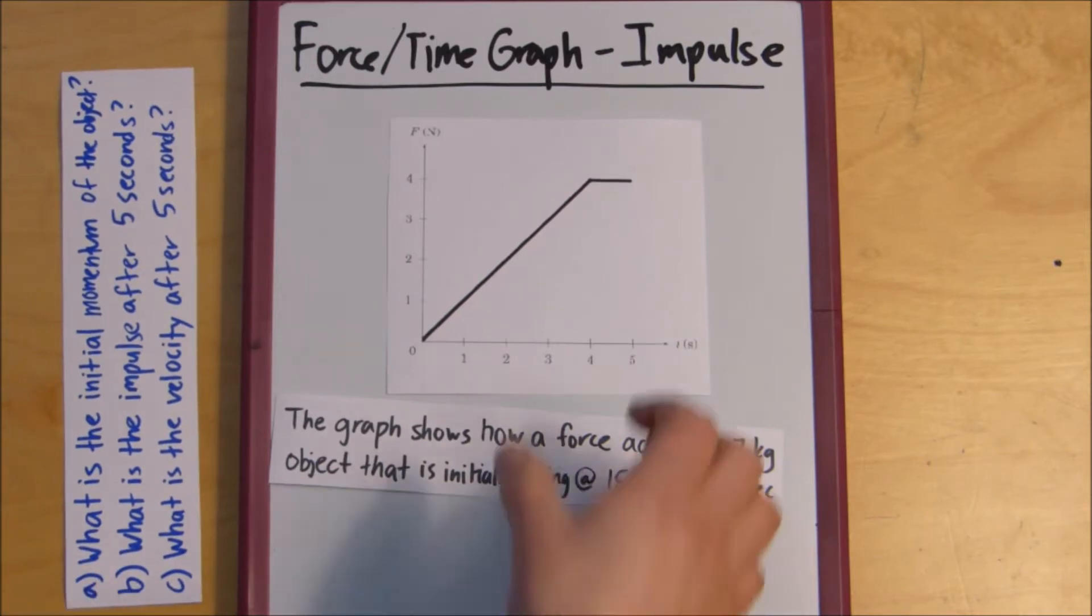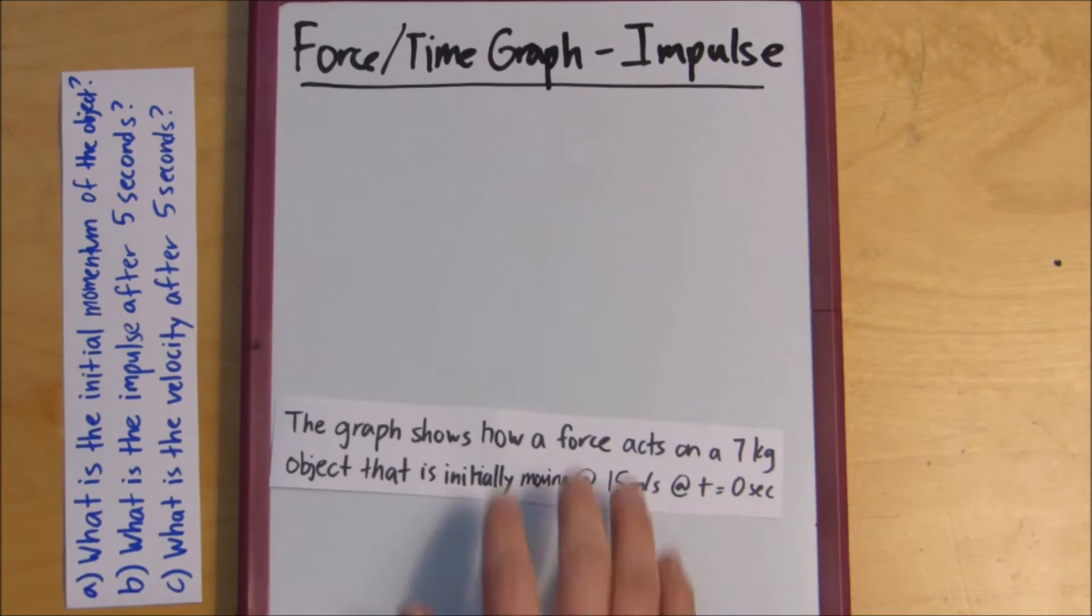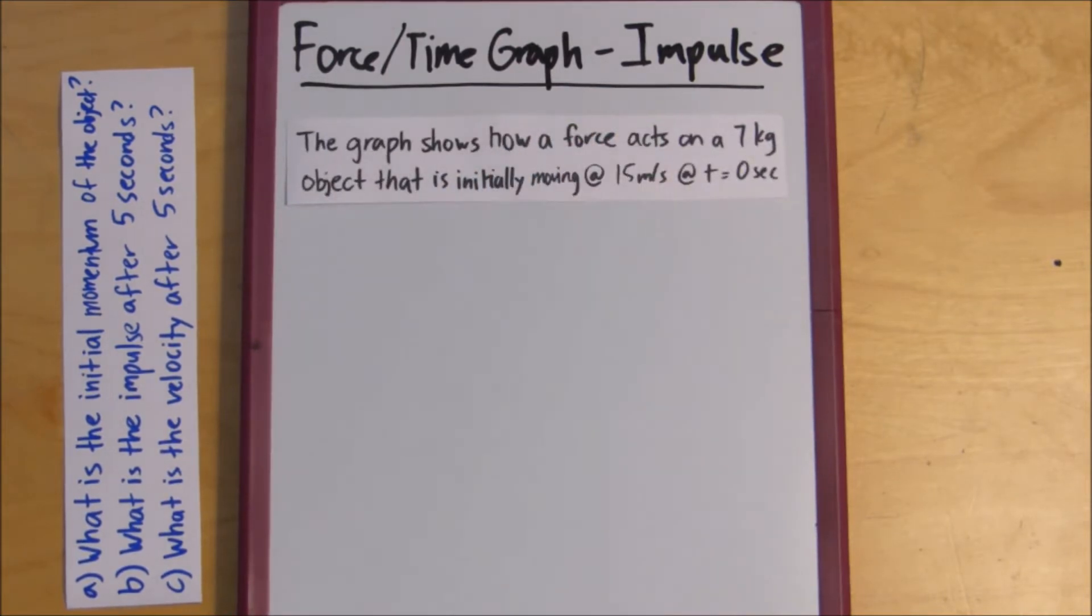What we can do is we can take the information provided in the little info thing and use the equation for impulse, which is force times change in time equals mass times change in velocity. Both sides of this equal impulse. So, we can pick a side and plug in what we know.